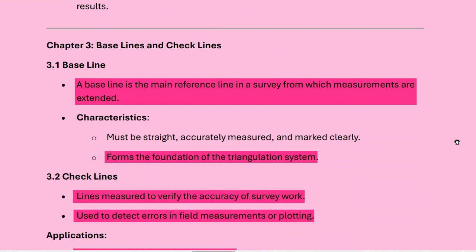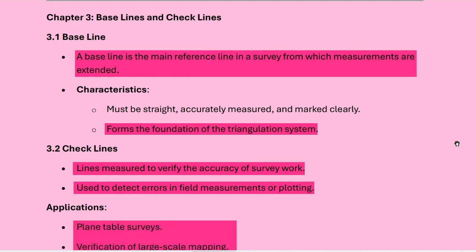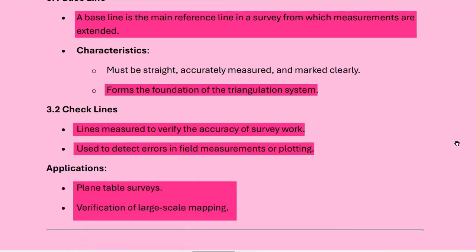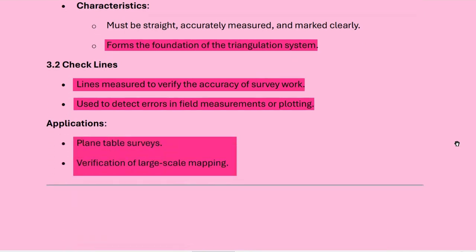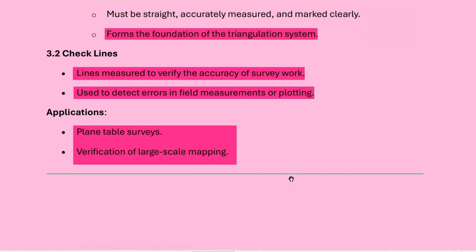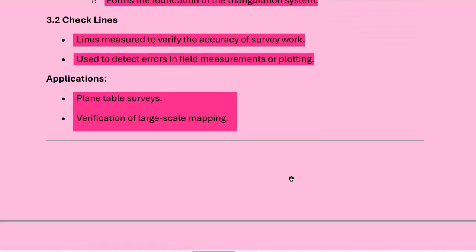The second basic term is checklines. Checklines are measurements taken to verify the accuracy of the survey work and are used to detect errors in field measurements or plotting. Their application includes use in plane table surveys and verification of larger-scale mapping.